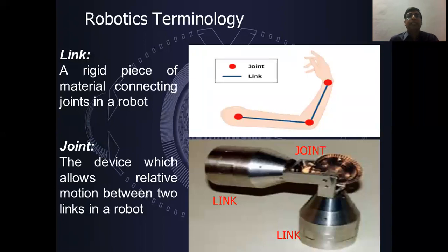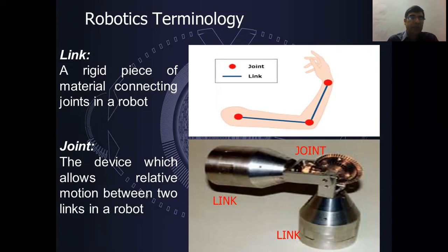Now let us discuss robotics terminology. The first term is Link — a rigid piece of material connecting joints in a robot. The second term is Joint — where relative motion is used between two links.